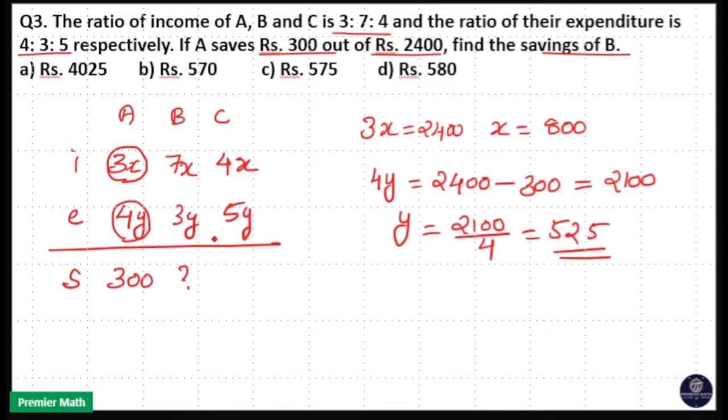We have to calculate B salary. That means 7x minus 3y. That is equal to 7 into 800, which is 5600 minus 3 into y which is 525.